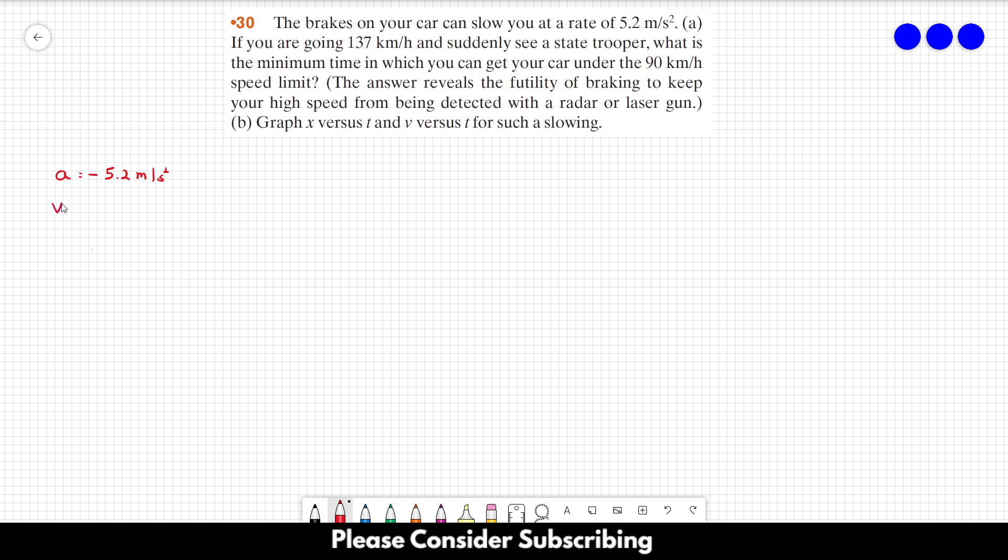We also know the initial speed, which is equal to 137 kilometers per hour. And we have to convert this to meters per second. So we just have to divide this by 3.6 and this gives us roughly 38.1 meters per second. The final speed we already know, we also know it is 90 kilometers per hour. So again, you have to divide it by 3.6 and this gives us 25 meters per second.